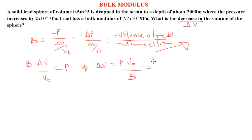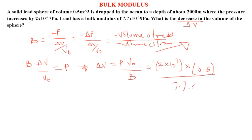So Delta V = P·V₀ / B. The pressure for this question multiplied by the original volume, which is 0.5, divided by the bulk modulus, which is 7.7 × 10⁹. On your calculator you should get approximately 0.00129, which we can approximate as 0.001 m³.